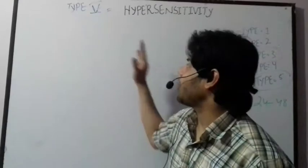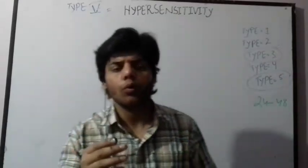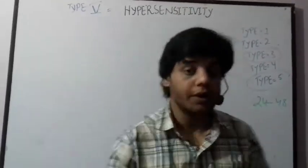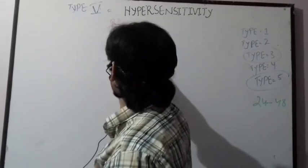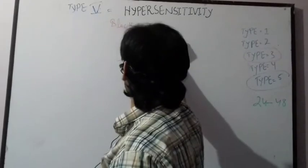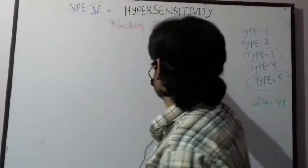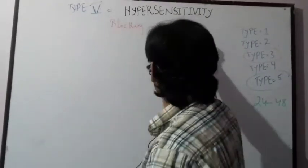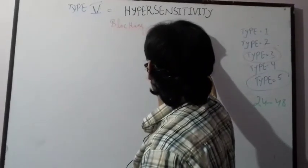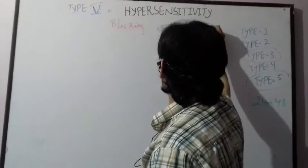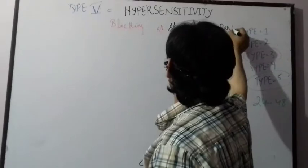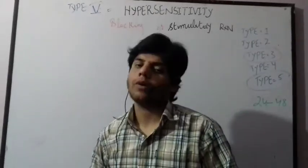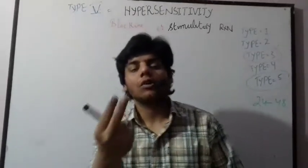Even so, let us discuss Type 5 hypersensitivity. This type is also called a blocking or stimulatory reaction. It is called this because it can cause two types of disease, and depending on the mechanism involved, it acts either as a blocking or a stimulatory reaction.